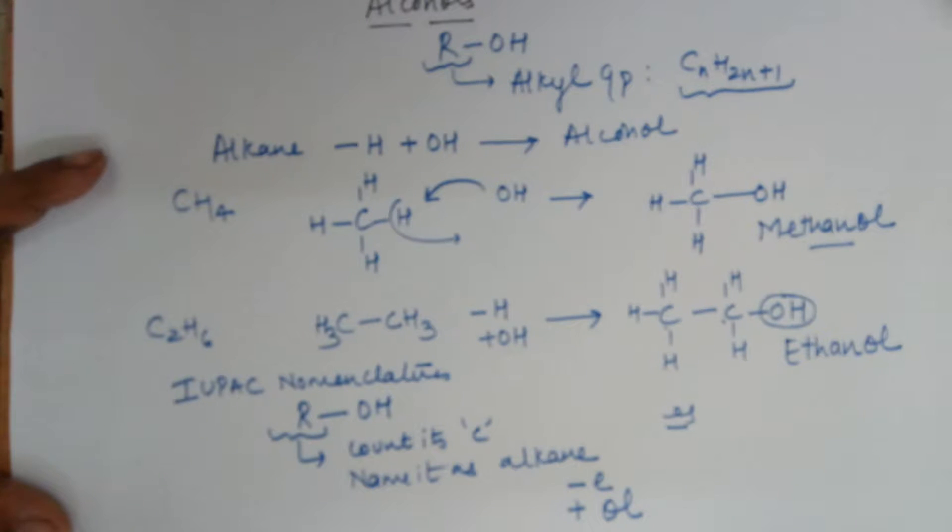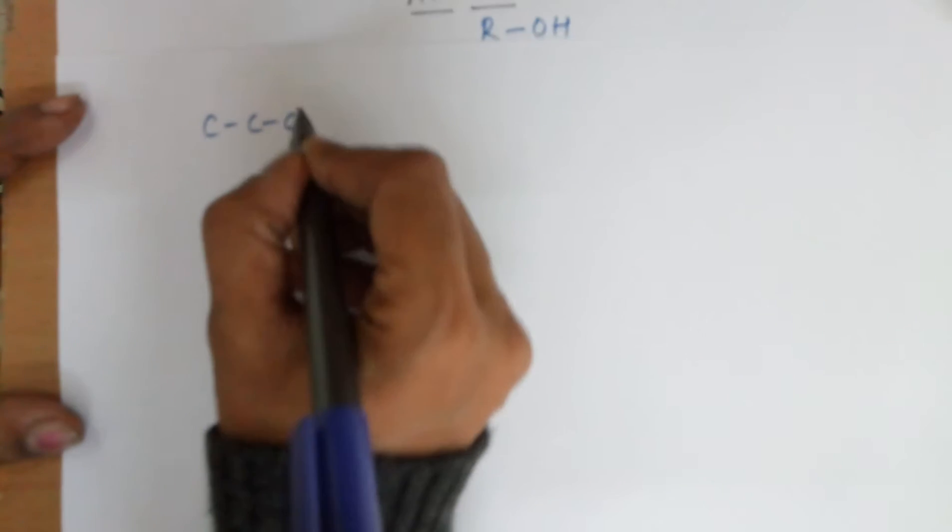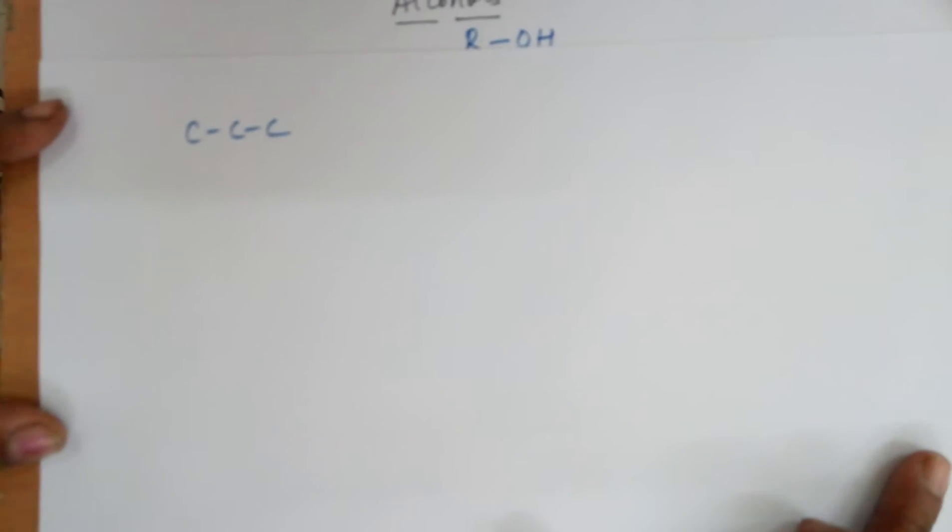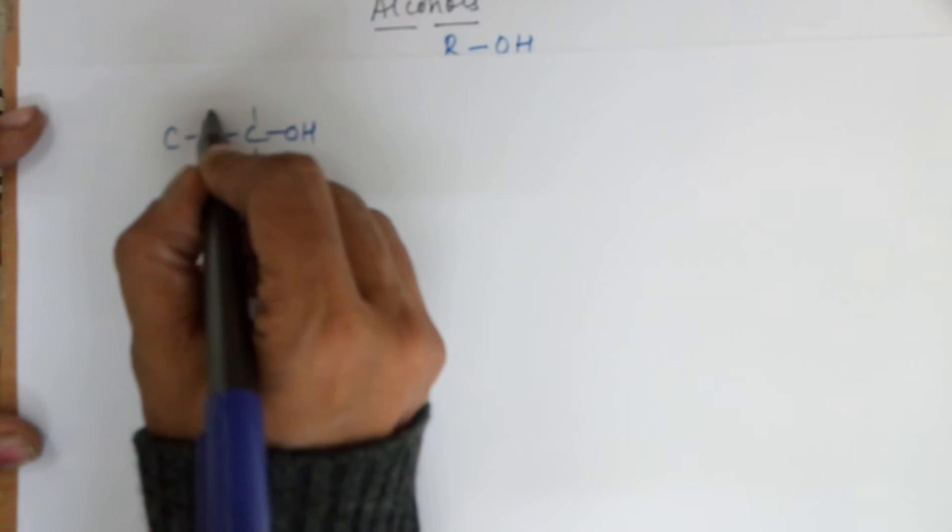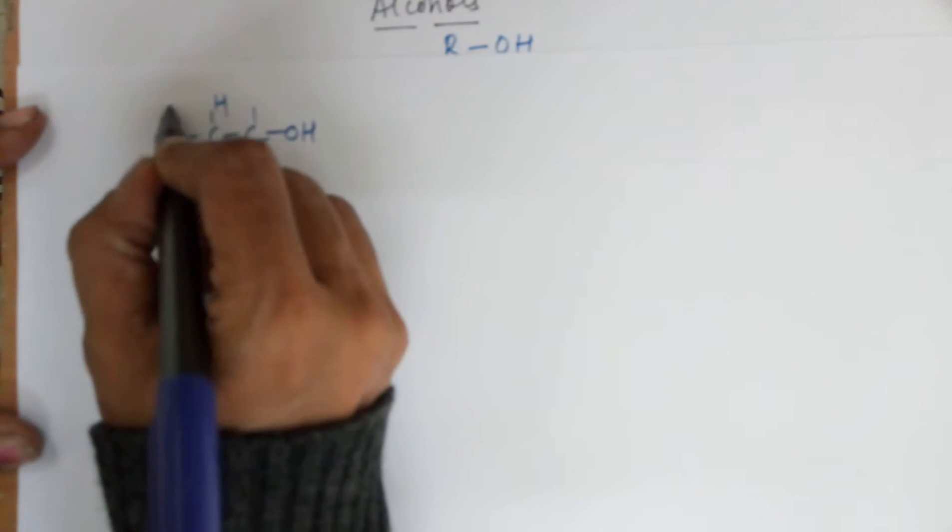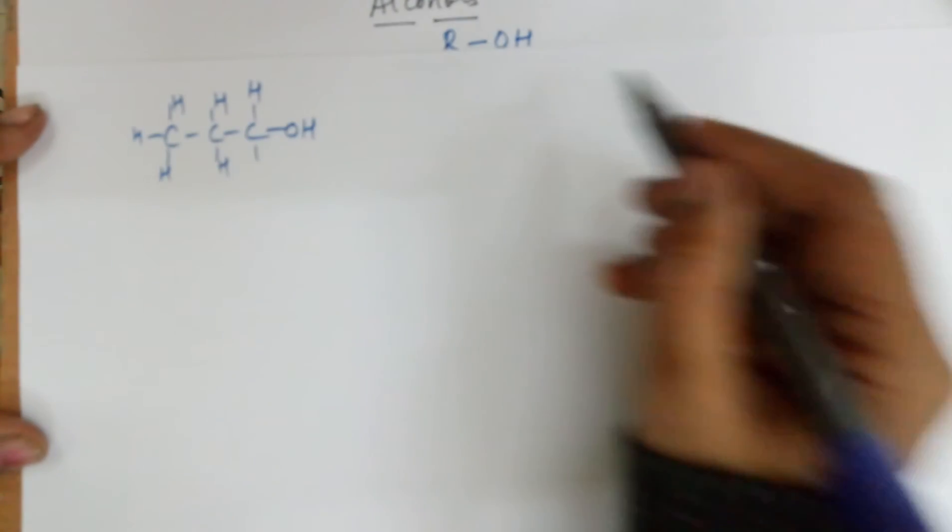But supposing I give you a third example. My third example is slightly different. I've taken three carbons. If you have three carbons in the alcohol, your situation would be like this. I have one, two, and three. Out of these three carbons, in one case I take the OH on the first carbon, while in the second case I am taking the OH in the central carbon.